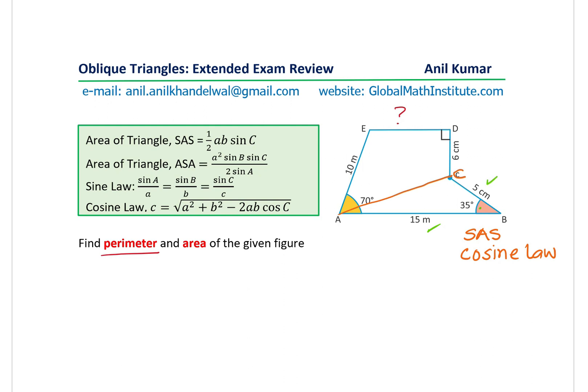Since we are given side angle side, we are going to use cosine law. To find the side, the formula will be used given here. So the side length, which is A to C, is square root of these two sides squared minus 2AB cos of C.